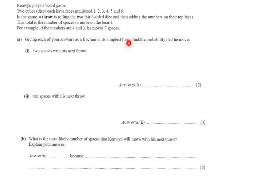What is going on? Give each of your answers as a fraction in its simplest form. That is important, guys. Find the probability that he moves two spaces with his next throw. So I'm rolling two dice and moving two spaces. Well, that is only possible if I roll a 1 followed by another 1, because then the sum is going to be 2, 1 plus 1. Is there another possibility? I can roll a 2, but then I would have to roll a 0, and there is no 0 on the second dice. So this is the only possibility, a 1 followed by a 1.